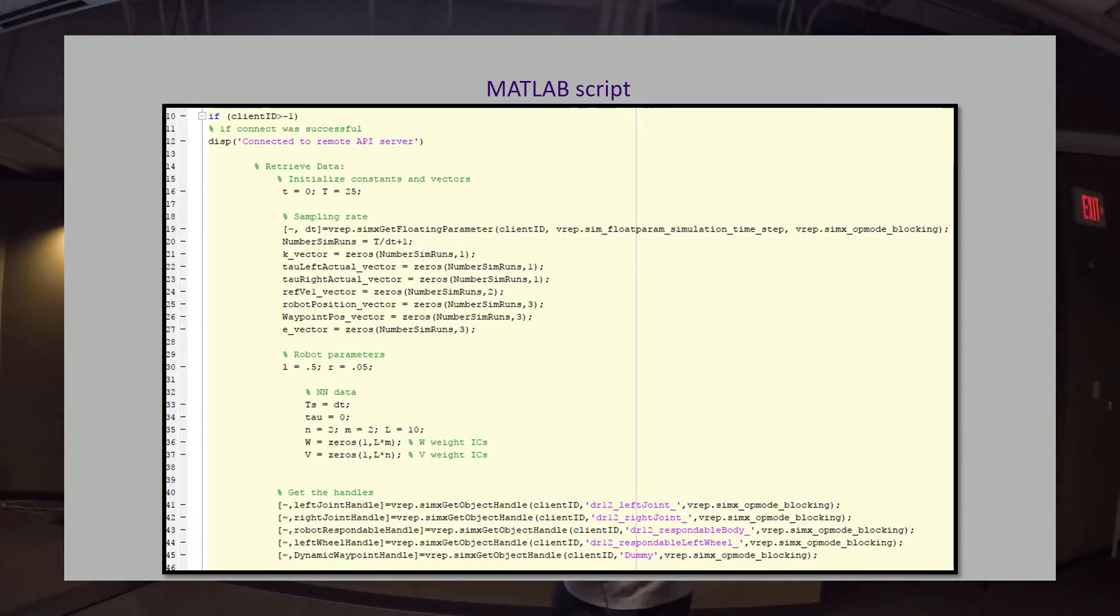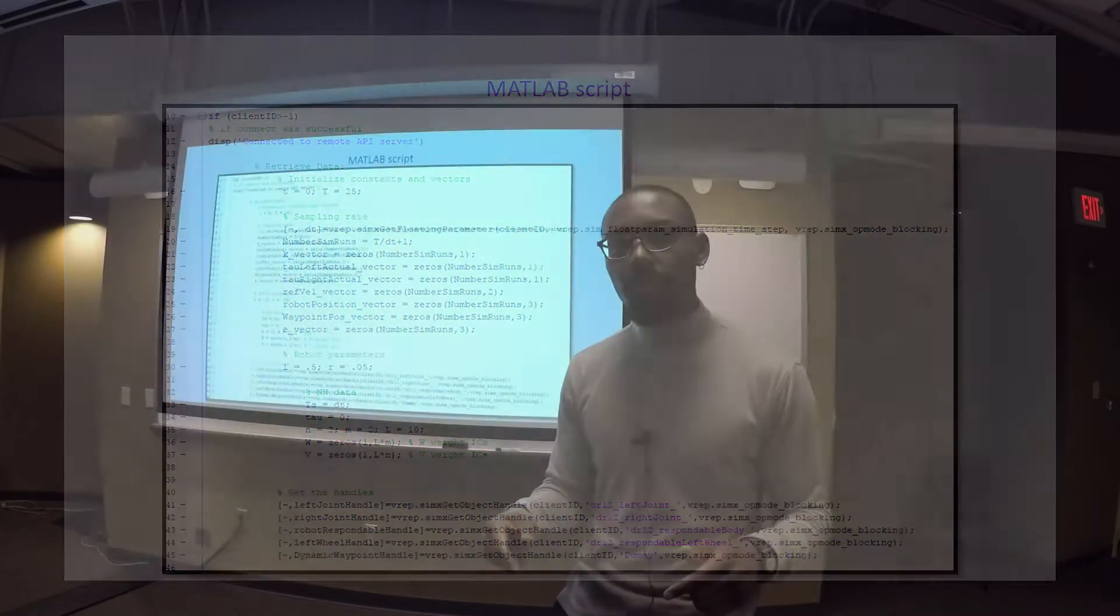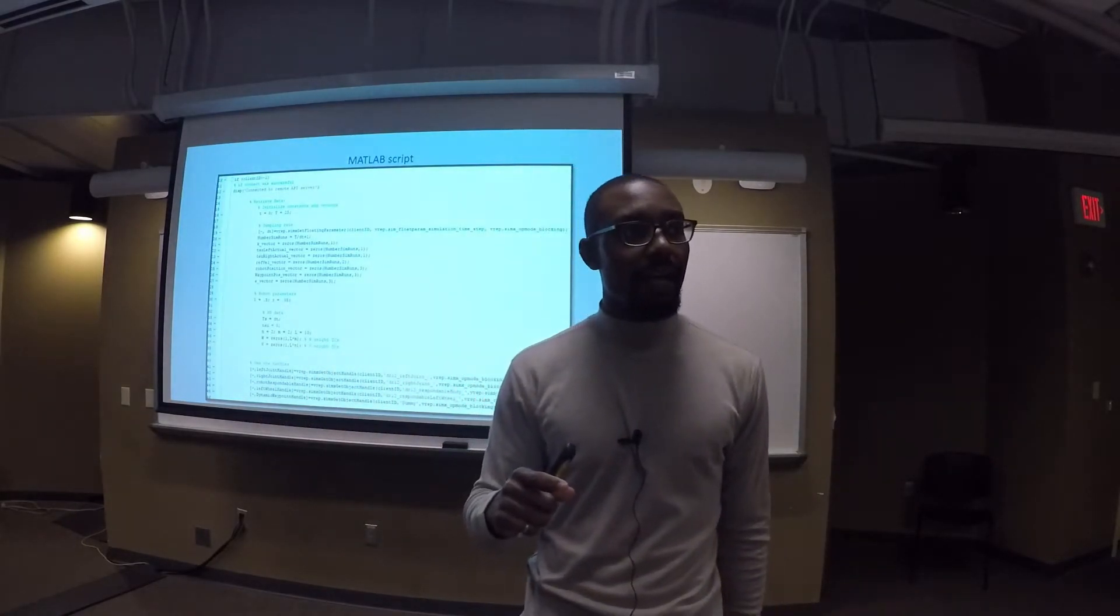And then we get the handles. All of these physical properties inside of VREP have names. You can see the names here in purple: DR12_left_joint, DR12_respondable_body, DR12_left_wheel_or_dummy. These are all names inside of VREP for these particular features. What we do is we use this SimX_object_handle function to get those objects inside of MATLAB, and we give them a new name to be used inside of MATLAB. I would say the most important thing about this piece of code is that we're using blocking commands. Everywhere where we're calling these functions, we're using blocking commands to once again tell VREP and MATLAB that they have to wait for one another before they send data to or fro.